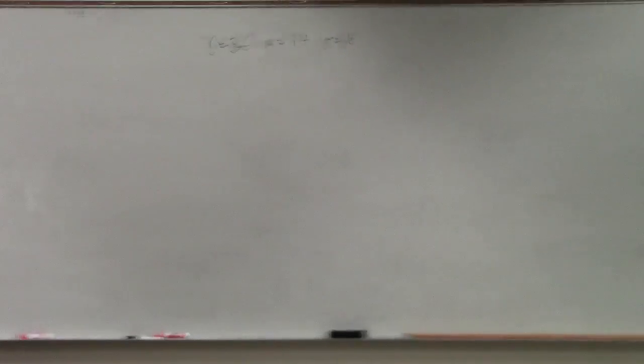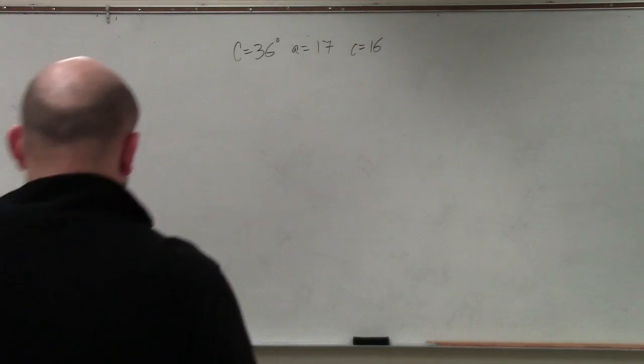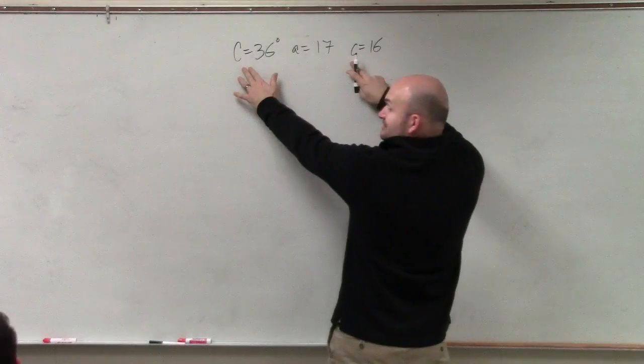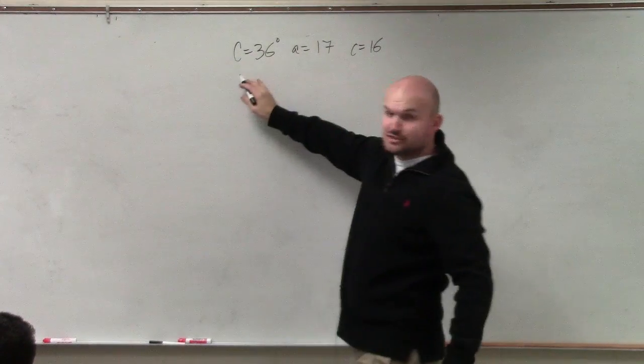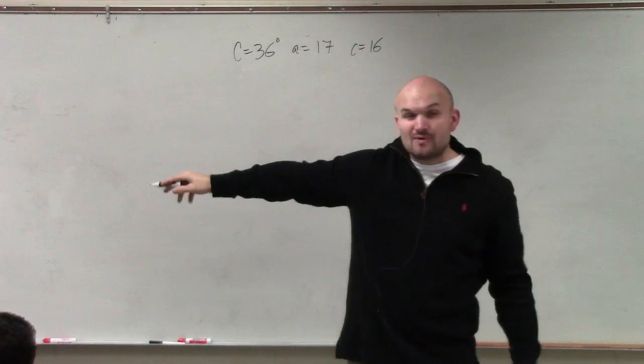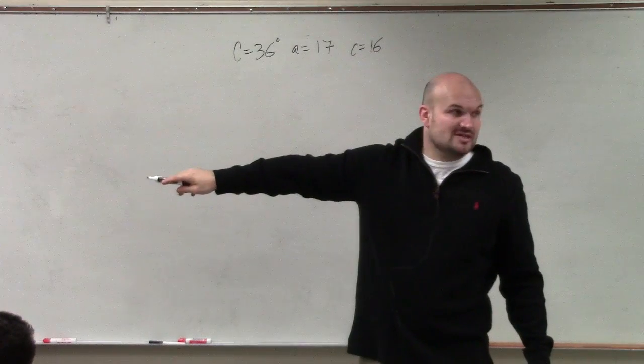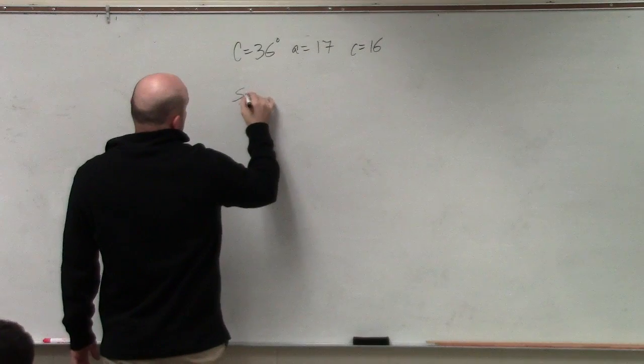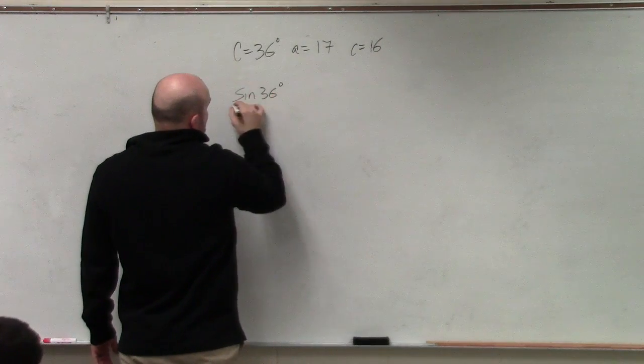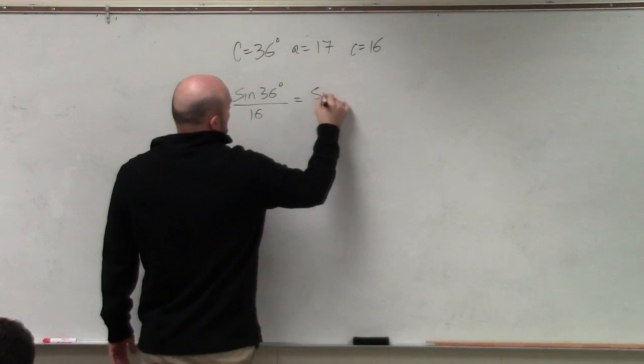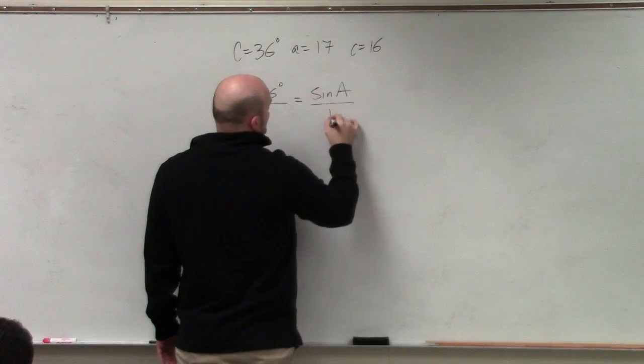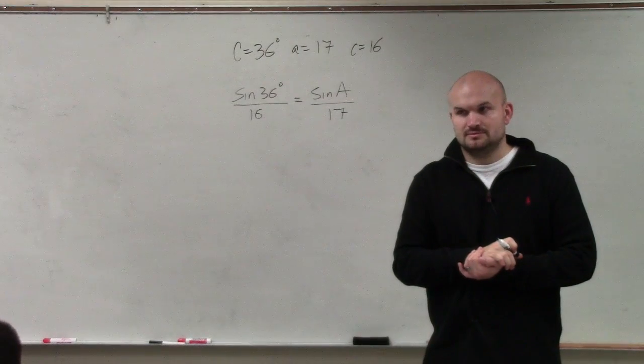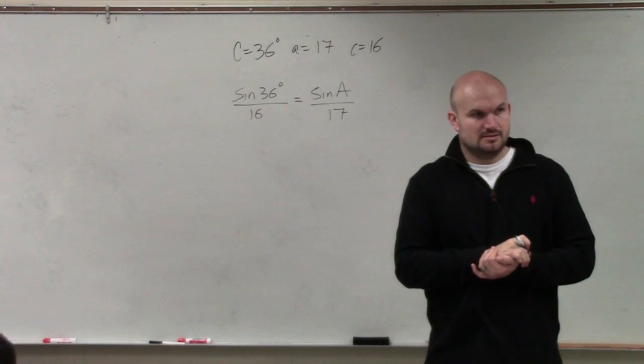So to do the law of sines, remember, we have to have a ratio. So we have to have a side length over its angle. Well, I have a c and a c, right? So that's what I'm going to want to use. And just remember, for the ambiguous case, I recommend having the angles on top. You could do it with the other ratio, but I recommend having the angles on top. So you'd say sine of 36 degrees over 16 is equal to the sine of big A over little a, which is 17.